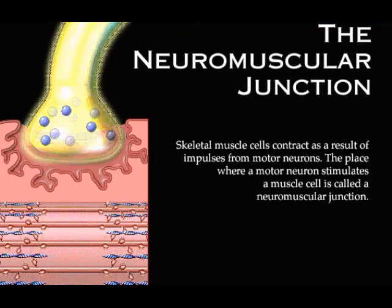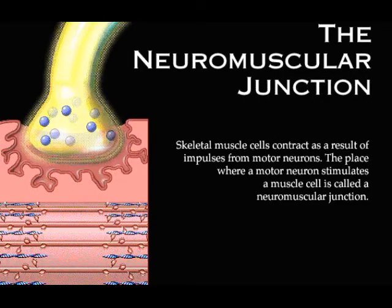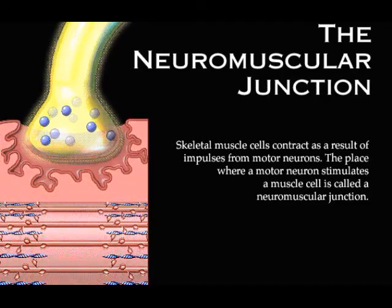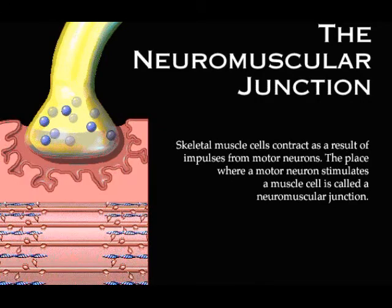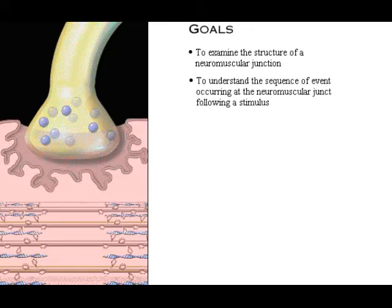Skeletal muscle cells contract as a result of impulses from motor neurons. The place where a motor neuron stimulates a muscle cell is called a neuromuscular junction. Your goals for learning are to examine the structure of a neuromuscular junction and to understand the sequence of events occurring at the neuromuscular junction following a stimulus.